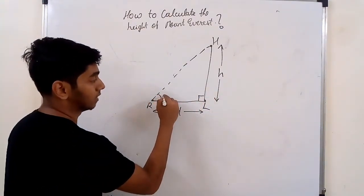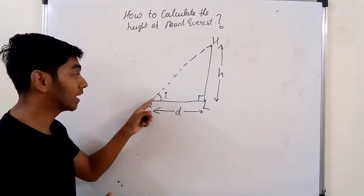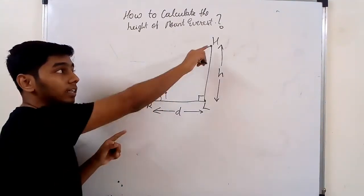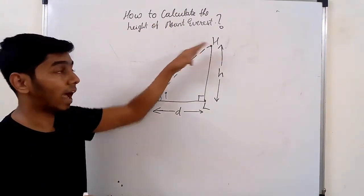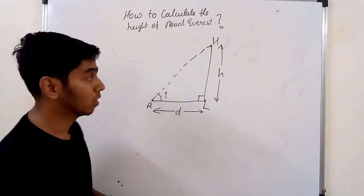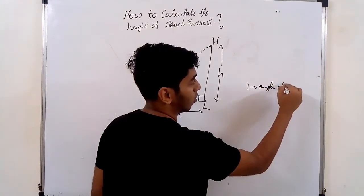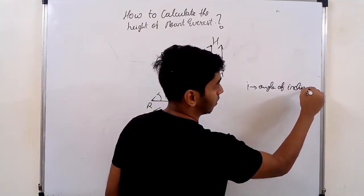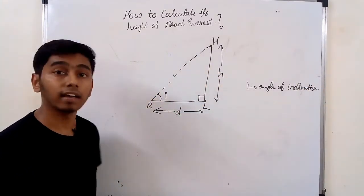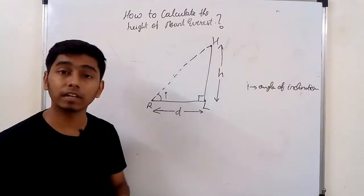Let's say this angle is I. Now what is I? We can calculate this angle. I'm standing here looking at the top of the building at an inclination. So this is called the angle of inclination — if I'm looking higher at a point, it is called the angle of inclination.